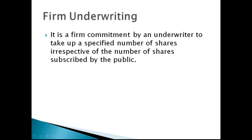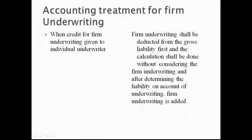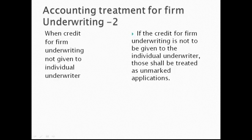Firm underwriting is a firm commitment by an underwriter to take up a specified number of SAS, irrespective of the number of SAS subscribed by the public. Accounting treatment for firm underwriting: When credit for firm underwriting is given to the individual underwriter, the firm underwriting shall be deducted from the gross liability first, and the calculation shall be done without considering the firm underwriting; after determining the liability on account of underwriting, firm underwriting is added. When credit for firm underwriting is not given to the individual underwriter, those shall be treated as unmarked.